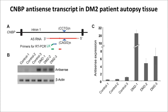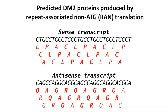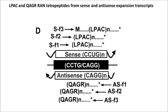In myotonic dystrophy type 2, we showed that there are actually two expansion transcripts. The next question was: could these expansion transcripts produce protein? That's been the focus of this paper — to show that these proteins are made and they're tetrapeptide repeat proteins: glycine, proline, alanine, and cysteine, abbreviated LPAC.